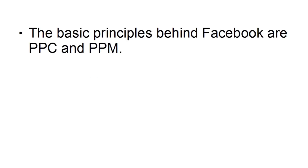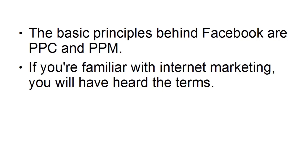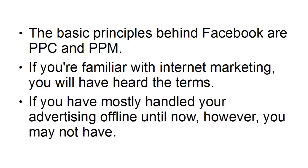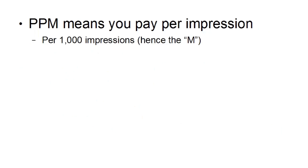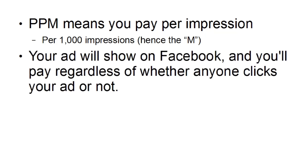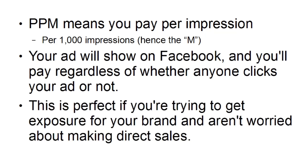The basic principles behind Facebook advertising are PPC and PPM. If you're familiar with internet marketing, you will have heard the terms before. But if you've mostly handled your advertising offline until now, you may not have. PPM means you pay per impression, or to be more specific, you pay per 1,000 impressions — hence the M. Your ad will show on Facebook and you'll pay regardless of whether anyone clicks on your ad or not. This is perfect if you're trying to get exposure for your brand and you aren't worried about making any direct sales.